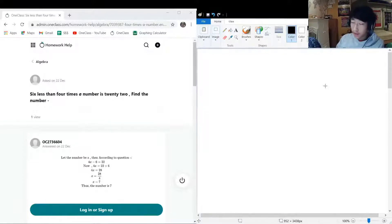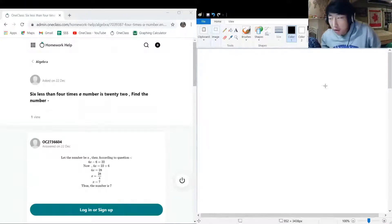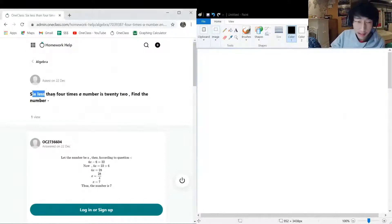Okay, so the next question that we have on the menu is a word question that we kind of need to translate into a mathematical model. And then once we have that, well, we can solve it and be happy. So the question is asking us, six less than four times a number is 22, find the number.